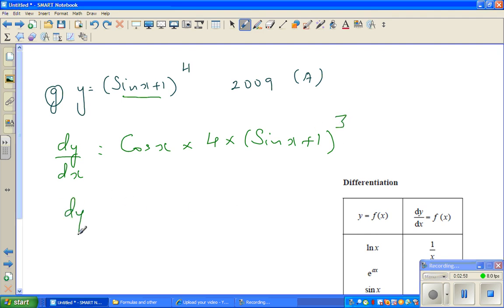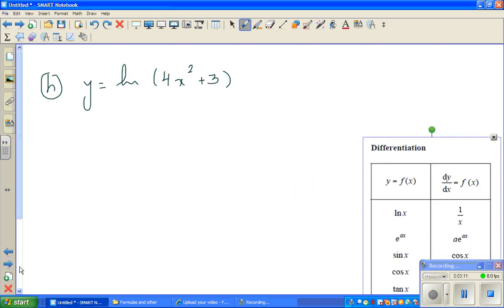If you want to write this a bit tidier, dy by dx is 4 cos x times sine x plus 1 to the power 3. Now the next one.